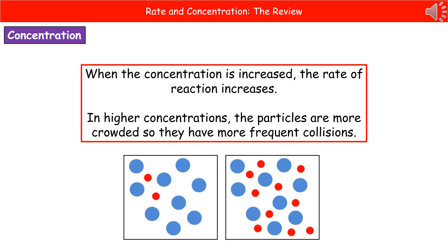When we consider the effect of concentration on the rate of a reaction, when we increase the concentration, we increase the rate of reaction. The reason for that is that when we've got a higher concentration, we have more crowded particles. Therefore, they're going to have more frequent collisions. So make sure that when they ask you to explain why increasing the concentration increases the rate of reaction, you use the phrase more crowded particles and more frequent collisions.